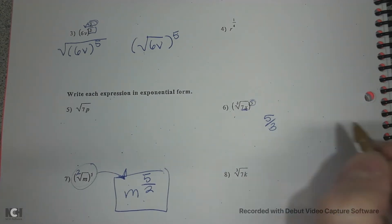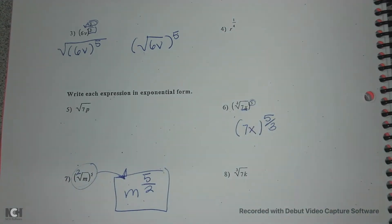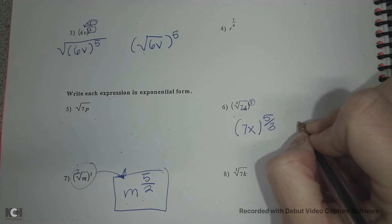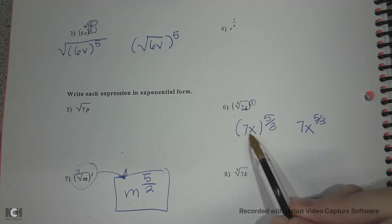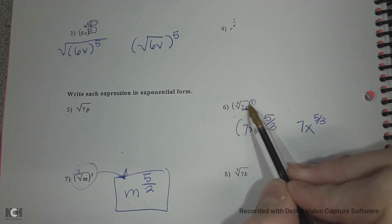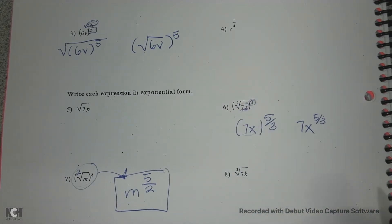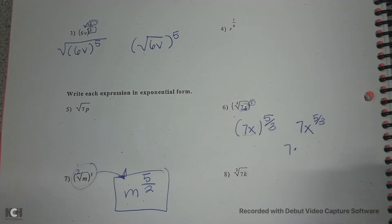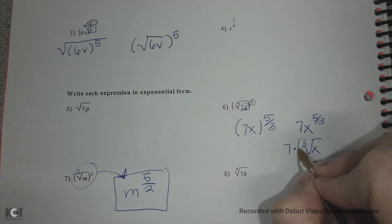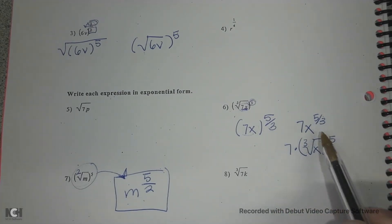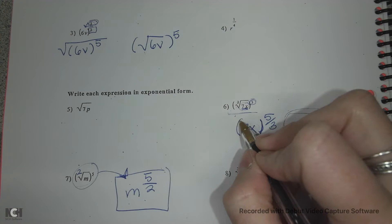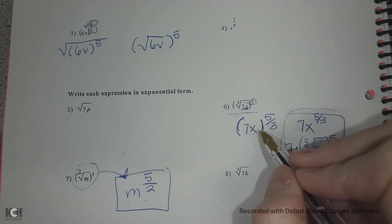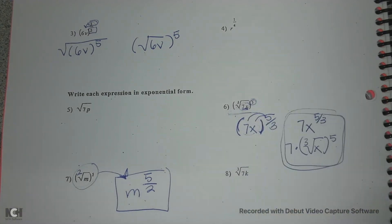If you're typing this somewhere, you have to include both items in parentheses. Without parentheses, the problem changes meaning entirely: 7x to the five-thirds power means all of 7x is raised to that power, but without parentheses it looks like only x is under the root and 7 is just multiplied separately. Make sure you're using parentheses — they show exactly what we're talking about.